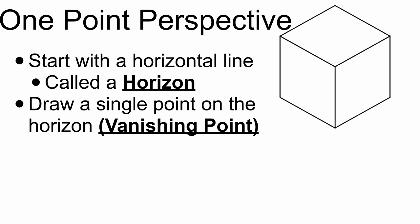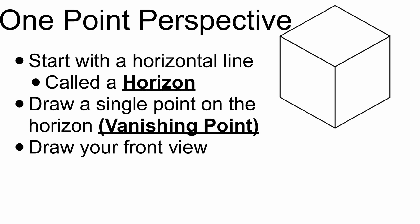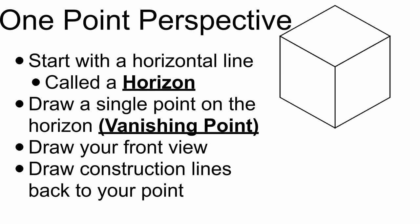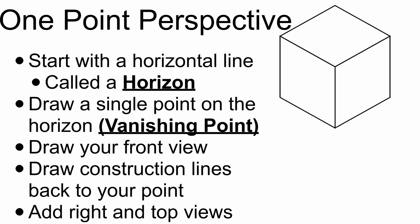Once you have that horizon, you're going to draw a single point on it called the vanishing point. Once you have that, you're going to draw your front view. If I'm drawing a cube, I want to draw the front view, which is just going to be a square. Then we'll add the right and top views in just a moment. After that, you draw construction lines back to your vanishing point, and finally add your right and top views.